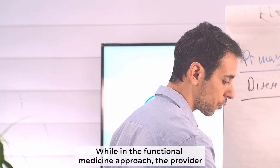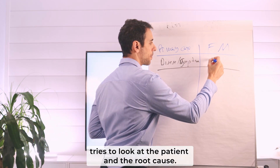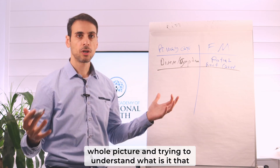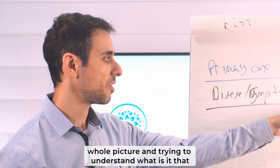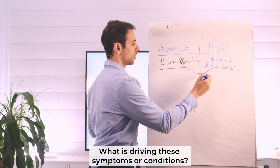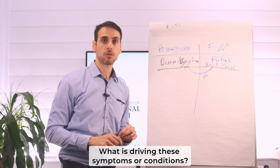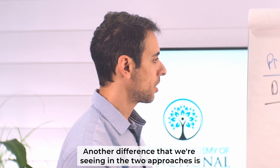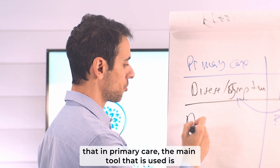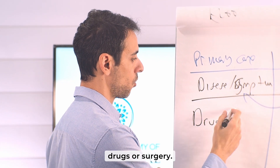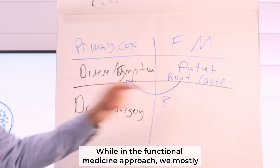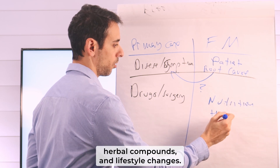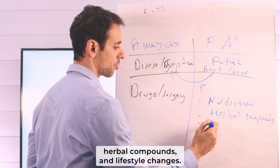While in a functional medicine approach, the provider tries to look at the patient and the root cause. We're trying to look at the whole picture and understand what is driving these symptoms or conditions. Another difference is that in primary care, the main tool used is drugs or surgery, while in the functional medicine approach, we mostly use clinical nutrition, herbal compounds, and lifestyle changes.